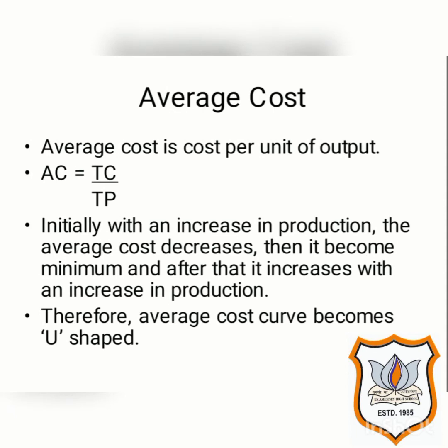Finally, talking about average cost — average cost is also known as average total cost. Average cost is the cost per unit of output; that means in order to produce one unit, how much total cost has been incurred is said to be average cost. The formula is: AC equals TC divided by TP. As we know, total cost is the sum of total fixed cost and total variable cost, so when total cost is divided by total production, we get average cost.